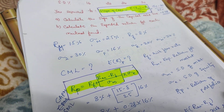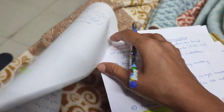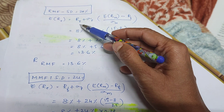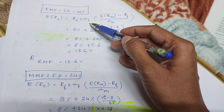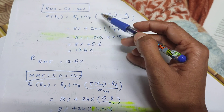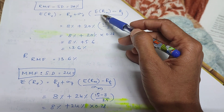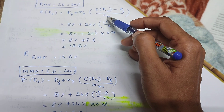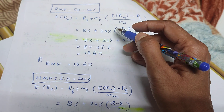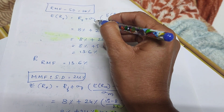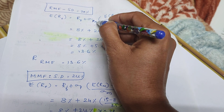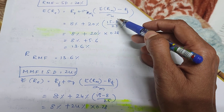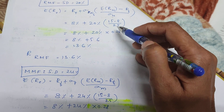Using the same procedure for the second mutual fund: the standard deviation is 20%. Applying the CML formula — risk-free rate plus the slope factor 0.28 into the standard deviation of this mutual fund — 8% plus 0.28 into 20%, that is coming to 13.6%.